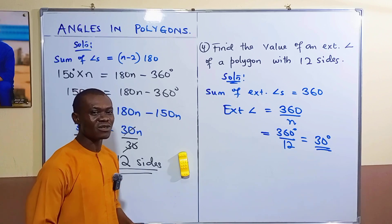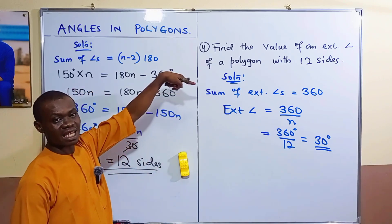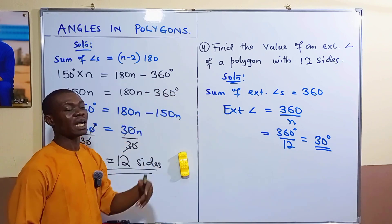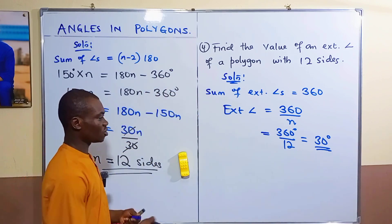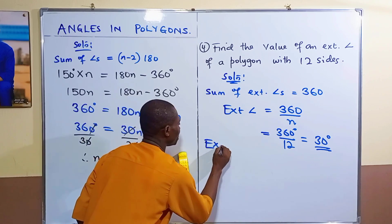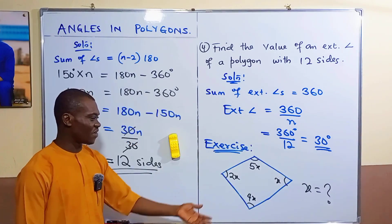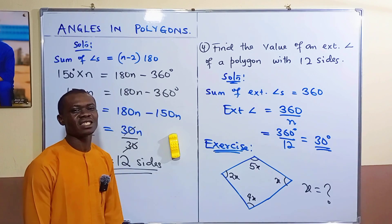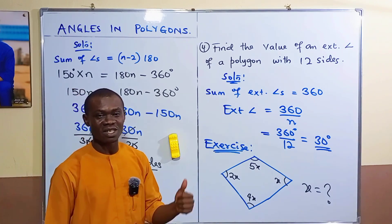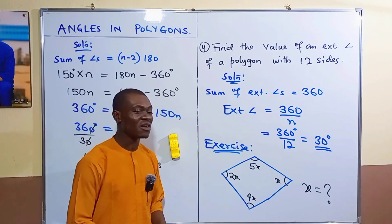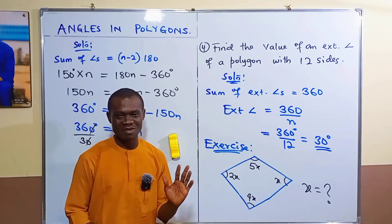This is where we end for this video. Kindly do the exercise — find the interior angle for part b with ten sides, and also find the value of x in the given exercise. Please subscribe to our YouTube channel and give us a thumbs up. We'll see you in our next lesson — bye!